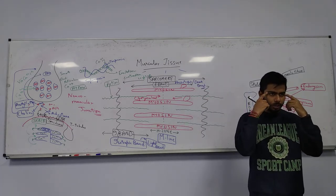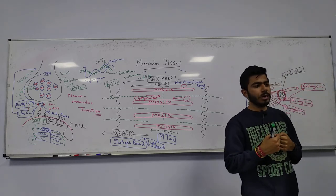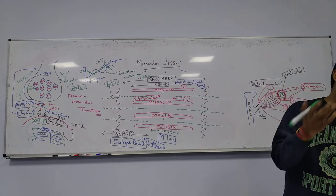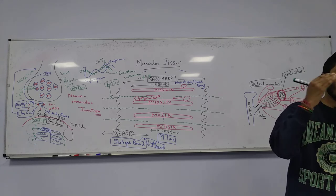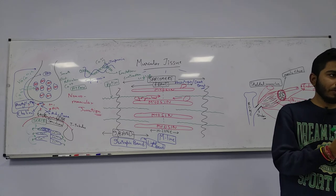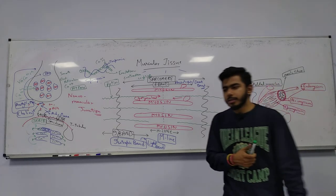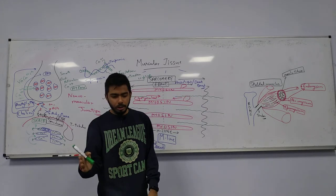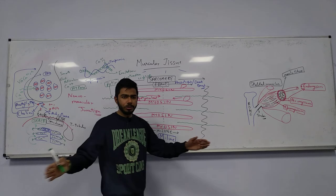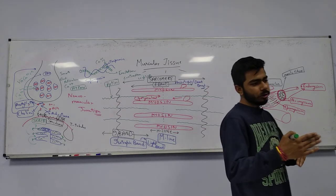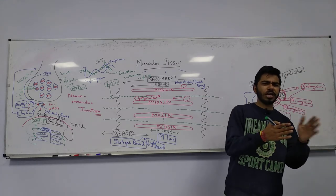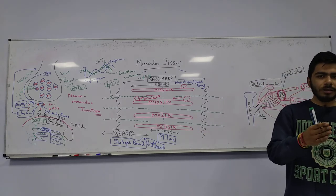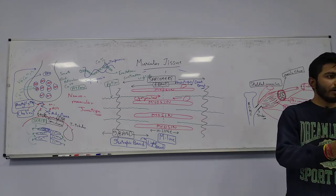White muscle fibers are found in ocular muscles, for example. They are powerful for short bursts — like sprinting 100 or 200 meters — but fatigue quickly. Red muscle fibers provide greater endurance and stamina: they tire over a longer period, whereas white muscle fibers tire in a shorter period.